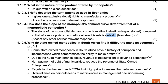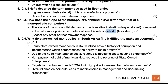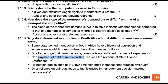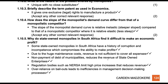Why do state-owned monopolies in South Africa find it difficult to make economic profit? Some state-owned monopolies in South Africa have a history of corruption and incompetence, which compromises the ability to make profit. Also, due to huge maintenance costs, revenue is not sufficient to cover all expenses, and debt from municipalities — people not paying for electricity — reduces state-owned revenue. Regulation bodies such as NERSA limit high price increases, reducing revenue further. Additionally, over-reliance on bailouts leads to inefficiencies in management decision-making processes.